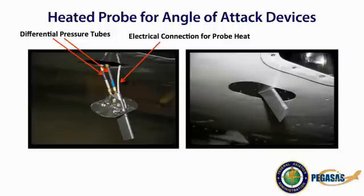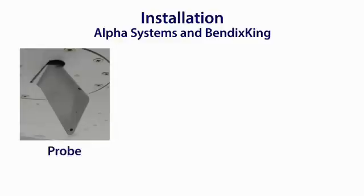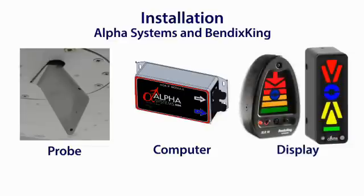It is recommended that probe heat be installed if the AOA system will be utilized in the IMC environment. The Alpha Systems and Bendix King devices utilize a three-part system: a probe that attaches to an inspection panel on the bottom of the aircraft's wing or fuselage, a computer to process inputs from the probe placed out of sight usually in the aircraft's cockpit, and the display unit. Installation is simple for aircraft with inspection panels. For aircraft without inspection panels or that are made of fabric, installation is more complicated but not impossible.